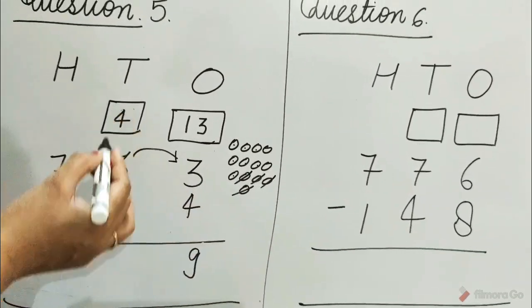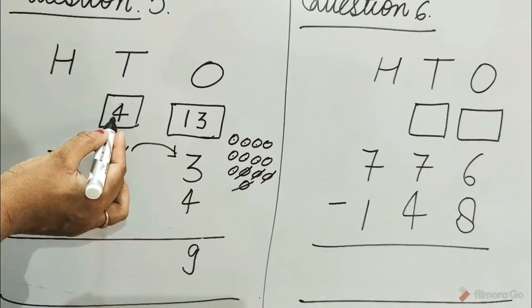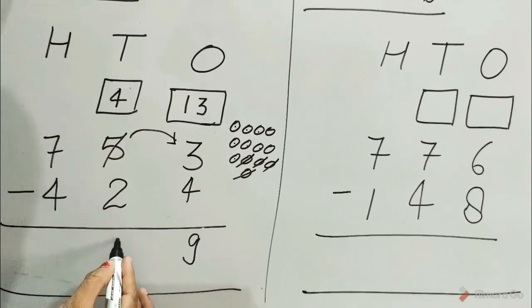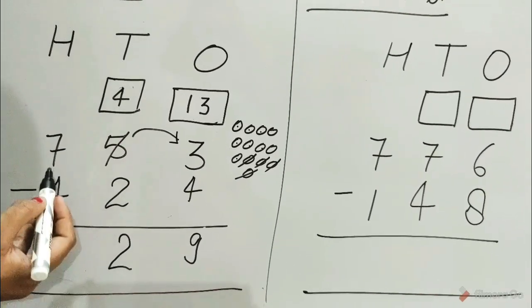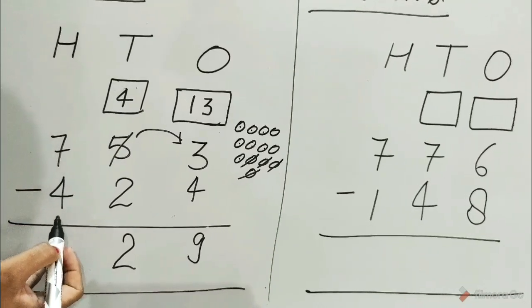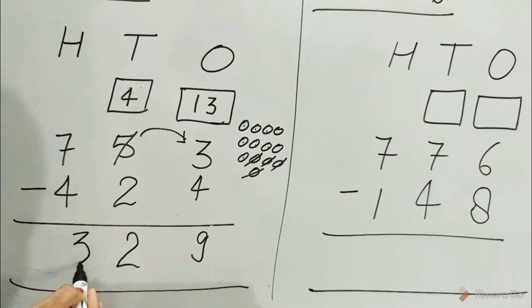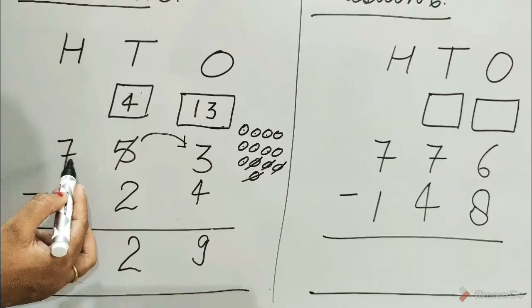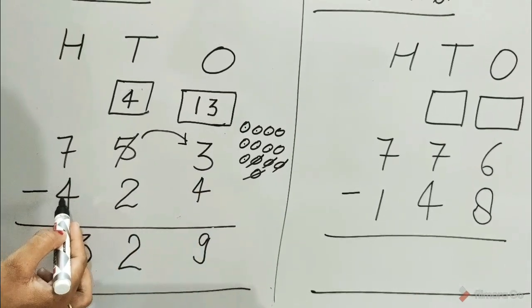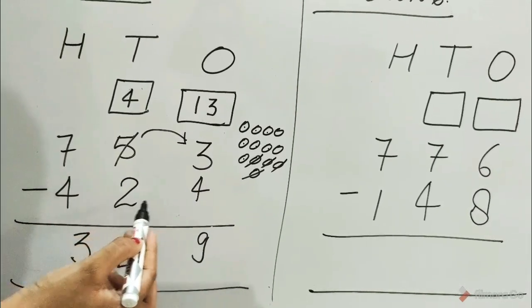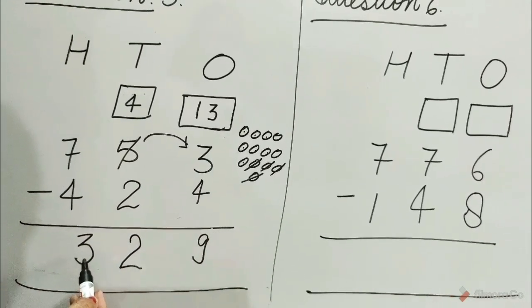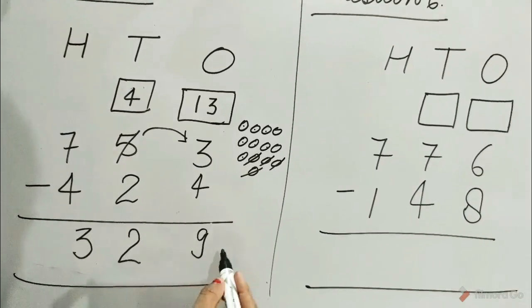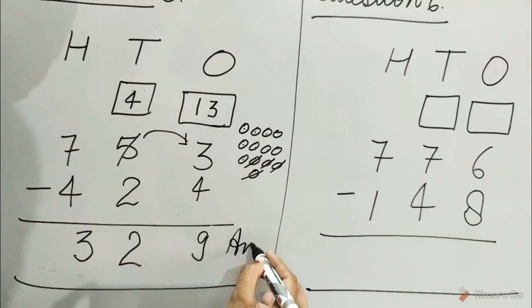Subtract the tens column. 4 minus 2 is equal to 2. 7 minus 4 is equal to 3. Hence, 753 minus 424 is equal to 329. Write answer.